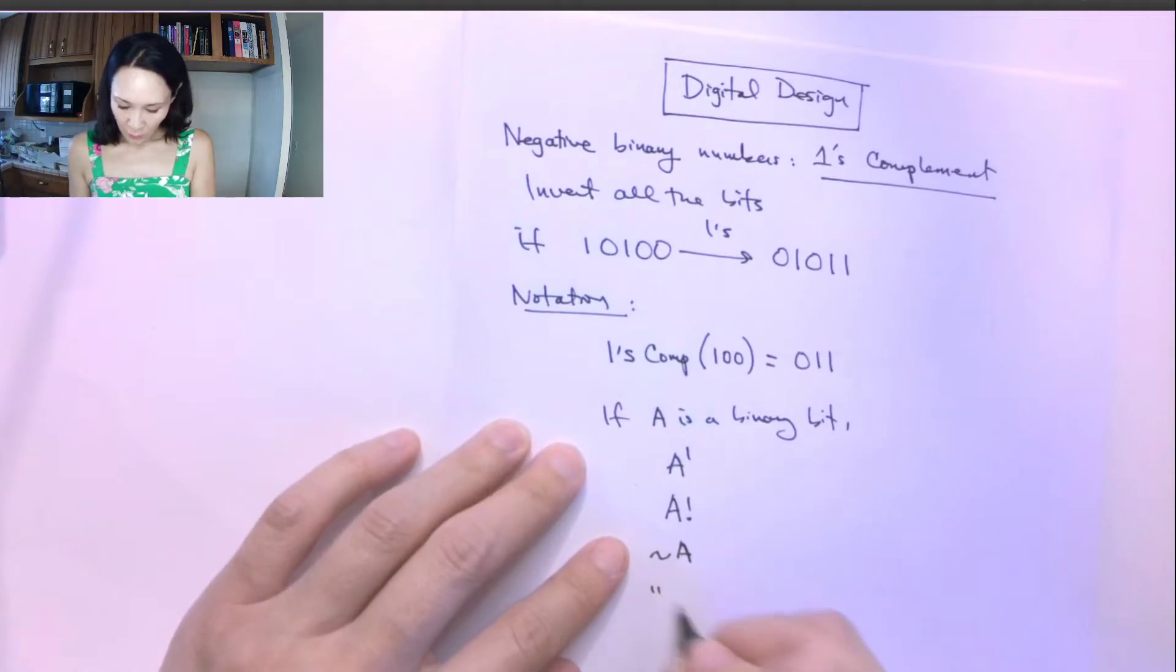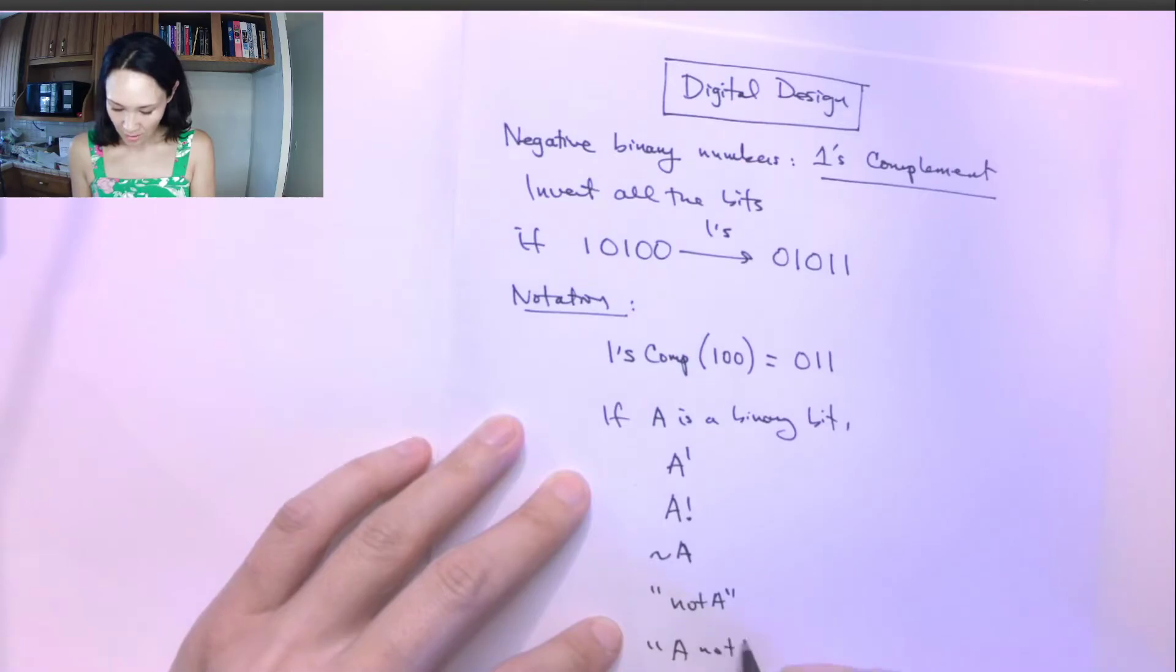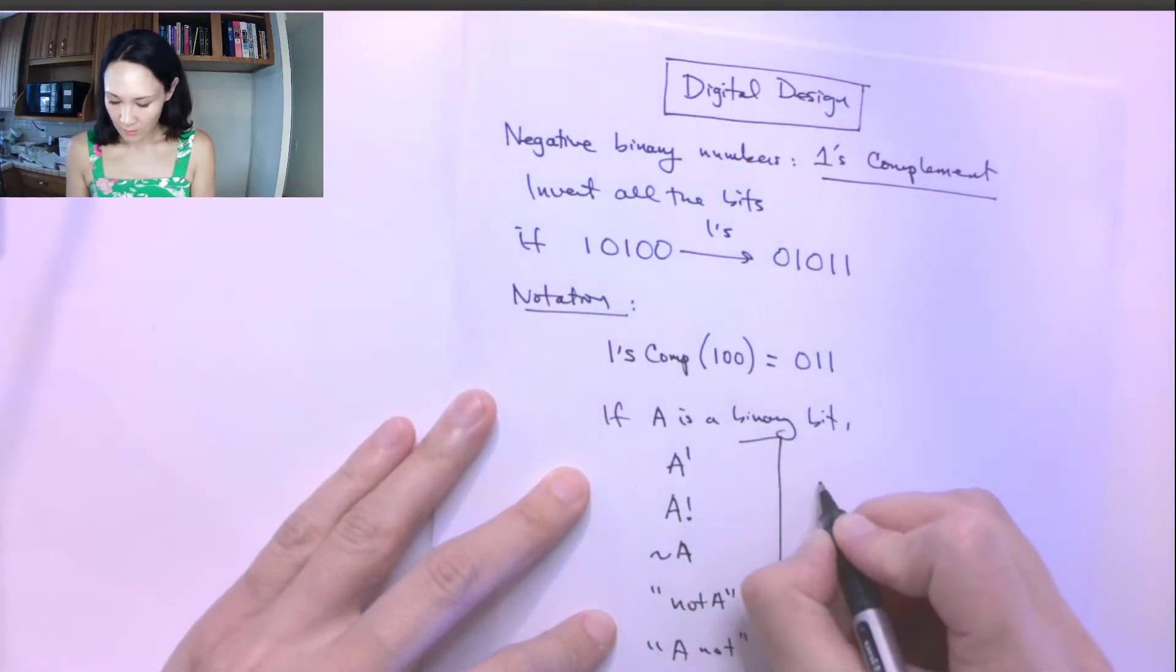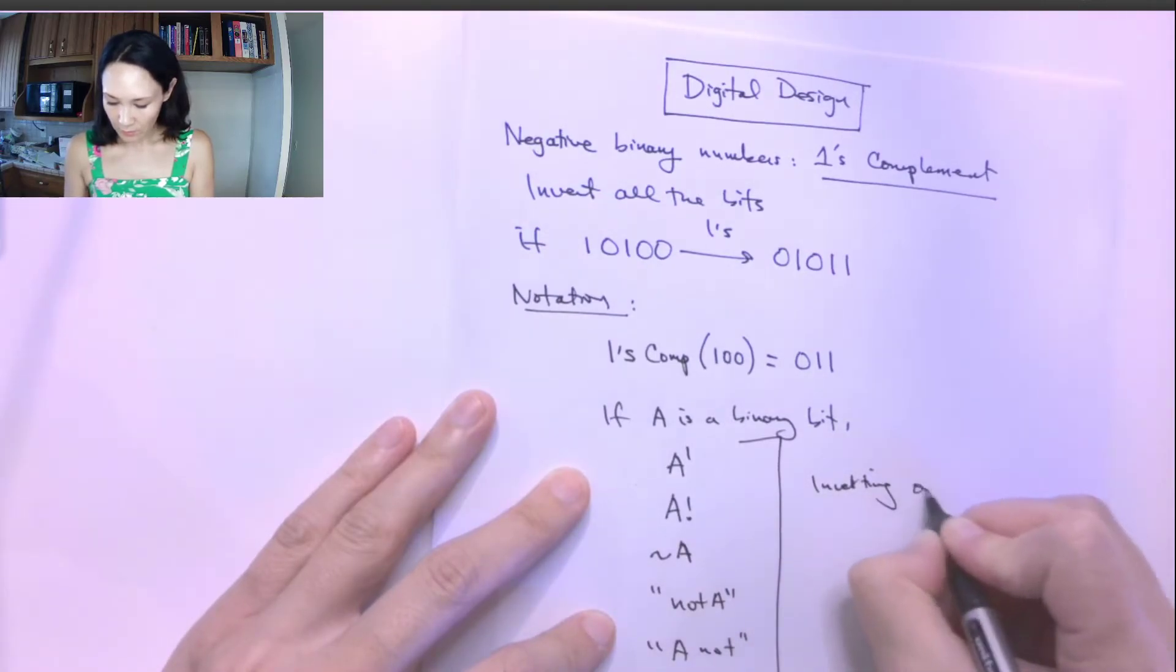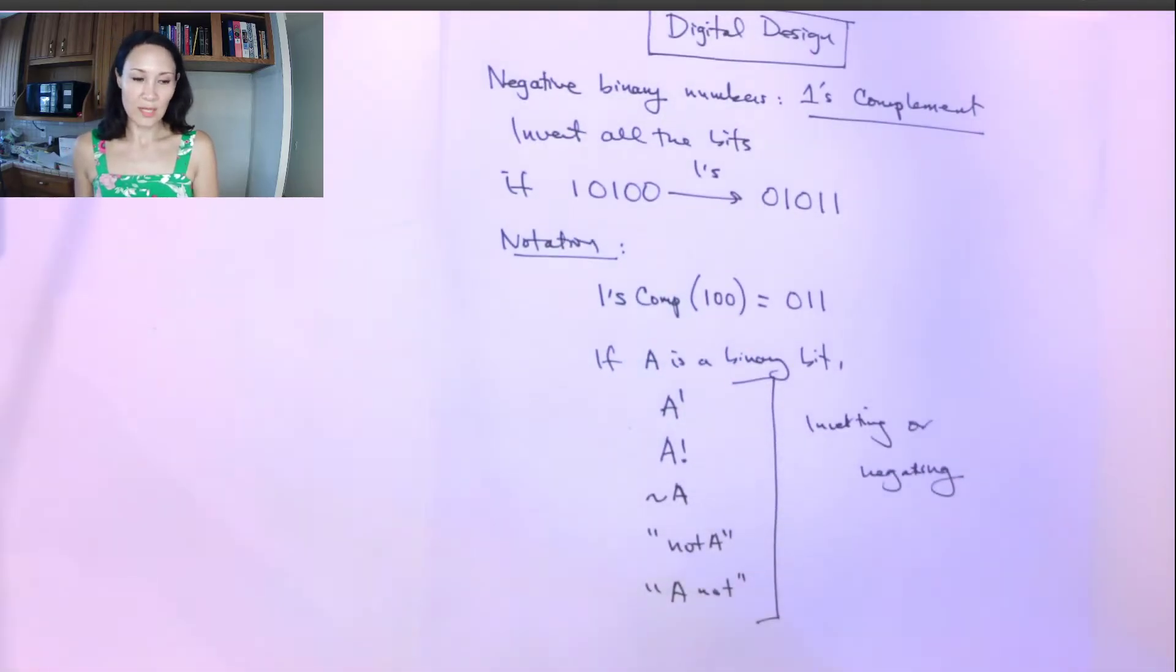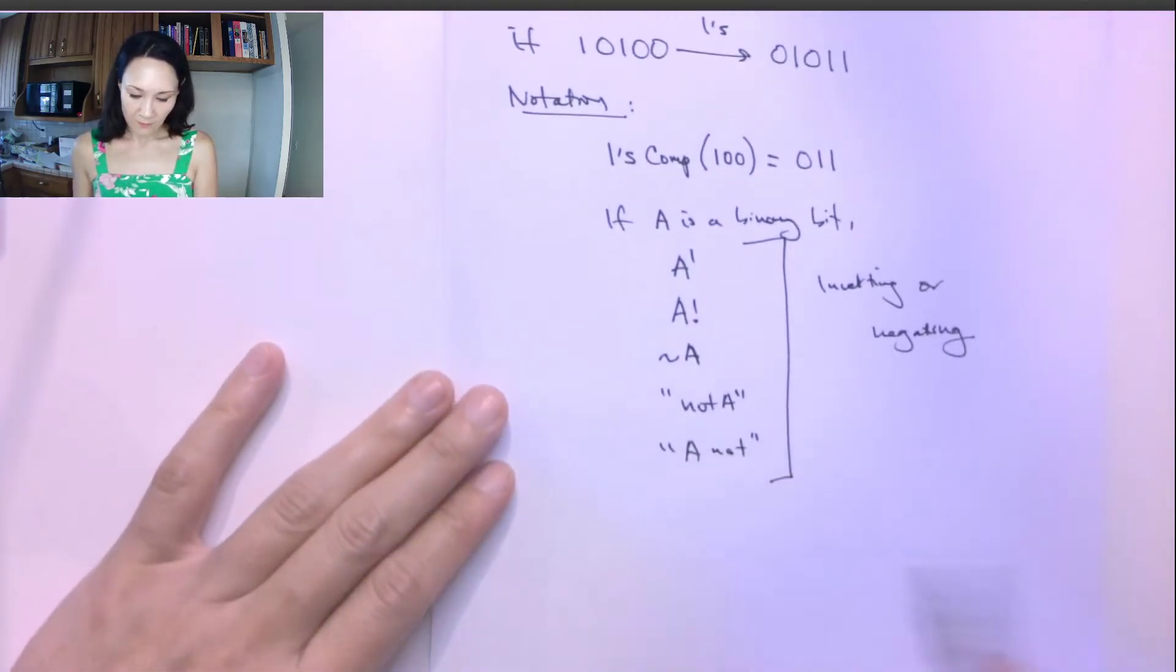Or you might hear the words not A or A not. And these are all terms for inverting or negating a bit. So we take the negative, or we take the inverse. That means we're just going to change it to a one if it's a zero, or we're going to change it to a zero if it's a one.